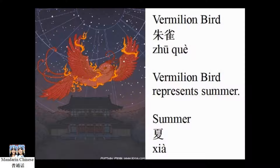When part of the Vermilion Bird becomes visible in the evening just as the sun sets, the Chinese know that summer has arrived. Vermilion Bird — 朱雀. Summer — 夏.